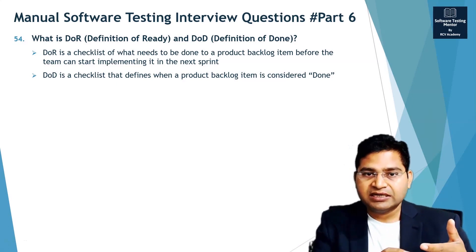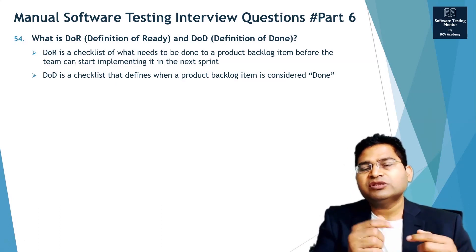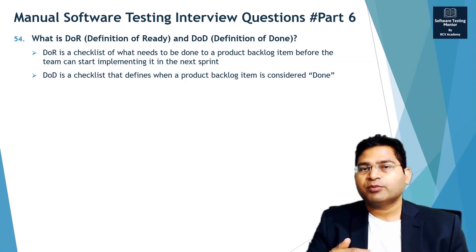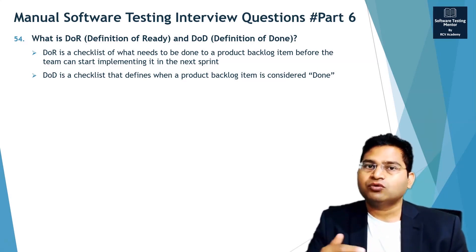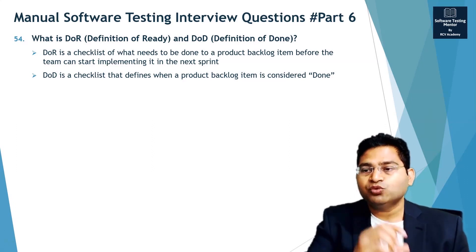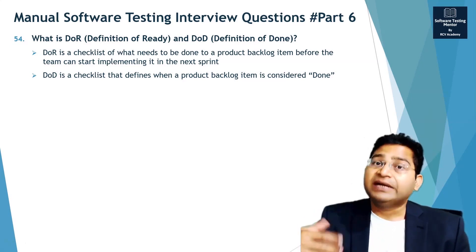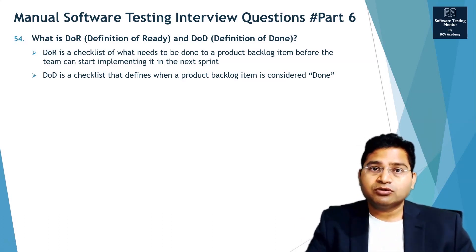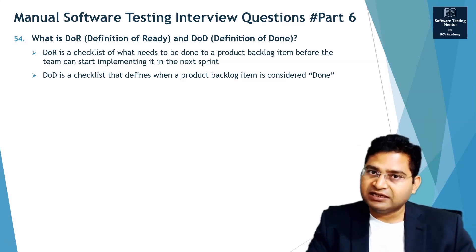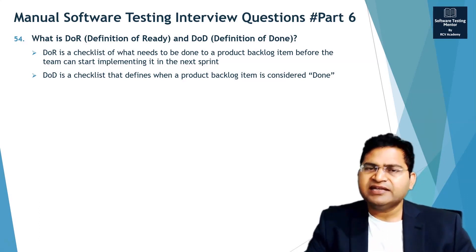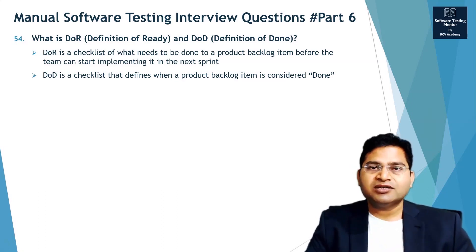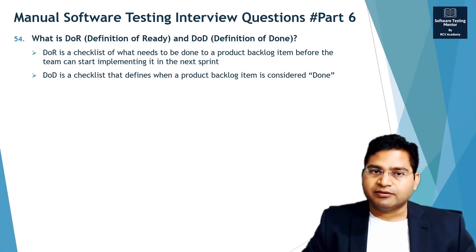User stories should have clear-cut requirements and defined acceptance criteria with no ambiguity. These are checklist items defined for a product backlog item to be called 'ready,' so the team can pick it up and start building without encountering ambiguities. When they read the story, they should clearly understand what needs to be implemented. All acceptance criteria, details, and outstanding questions must be completed and documented in the user story so it is absolutely ready to be built.